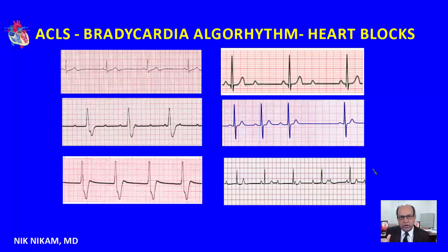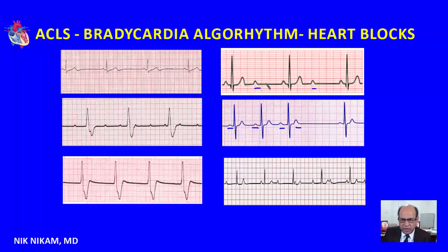Then we have second degree AV block, under which we have two categories: the Wenckebach block, where there is progressive prolongation of the PR interval followed by a dropped P wave. Here is an example of a Type 2 AV block, where the PR intervals are constant but there is a P wave dropped after each QRS complex. Nonetheless, a slower heart rate associated with cardiovascular symptoms needs attention.